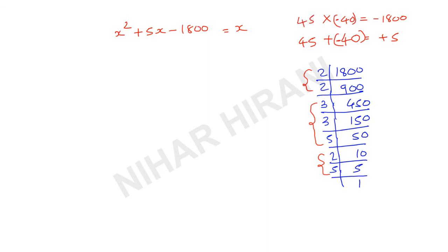So now instead of 5X, I will write something like this: X square plus 45X minus 40X minus 1800 equals 0. Now I will take X common from these two: X common into bracket X plus 45. Here minus 40 common into bracket X. This minus will be plus. Why? Because of this minus sign. So plus 45 equals 0.